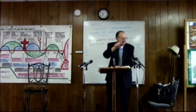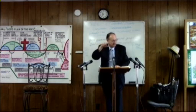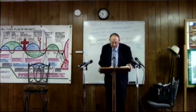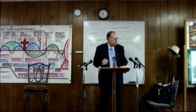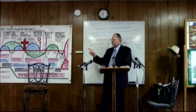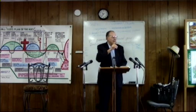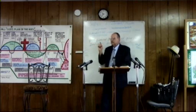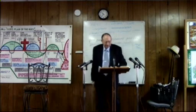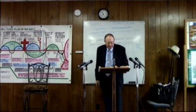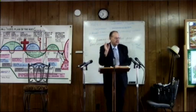And he was saying to them, 'To you it has been given the mysterion — the secrets of the kingdom of God.' Who are they? This is the church. The apostles were the first gift placed in the church, as found in 1 Corinthians 12:28. But to those who are on the outside, everything comes in parables and dark sayings — so that seeing they may see and not perceive, and hearing they may hear and not understand, lest they return and be forgiven.